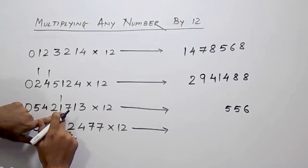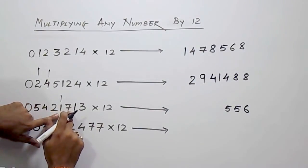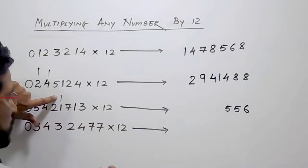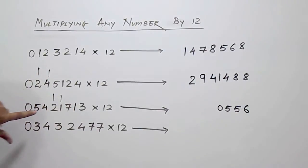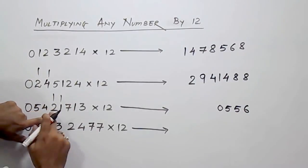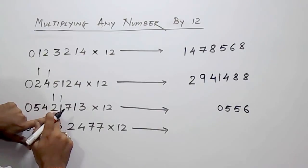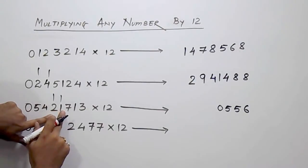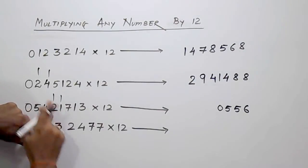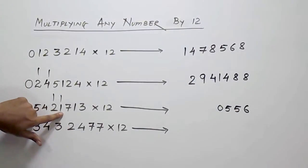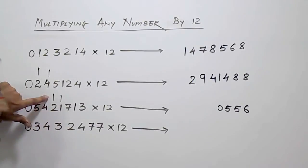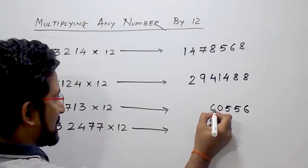1's double is 2, 2 plus 7, that is 9, 9 plus 1, that is 10 — so we'll carry forward 1. Now 2's double is 4, 4 plus 1, that is 5, and we have carried this 1, so it will be 4 plus 1 plus 1, that is 6.